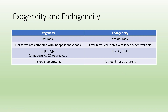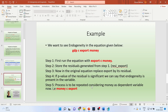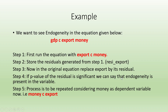How to detect the presence of endogeneity? In the equation where GDP is the dependent variable and export and money are independent variables, we first run a regression where export is treated as the dependent variable against money. We store the residuals of this regression, then replace export with its residuals in the original equation. If the p-value of the residual is significant, endogeneity is present. This process is then repeated treating money as the dependent variable.